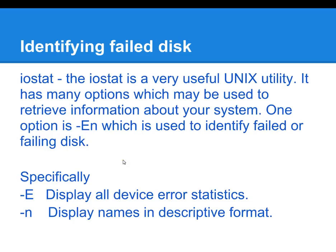Another way that you can locate a failed disk is to use the IOSTAT command. IOSTAT is a very powerful utility and you can use it for several things. One of the things you can use it for, as I've mentioned, is to identify failed disks. The switches that we would use for IOSTAT would be IOSTAT -En. The E option displays all the device errors and statistics, and the small n displays the name in descriptive format.